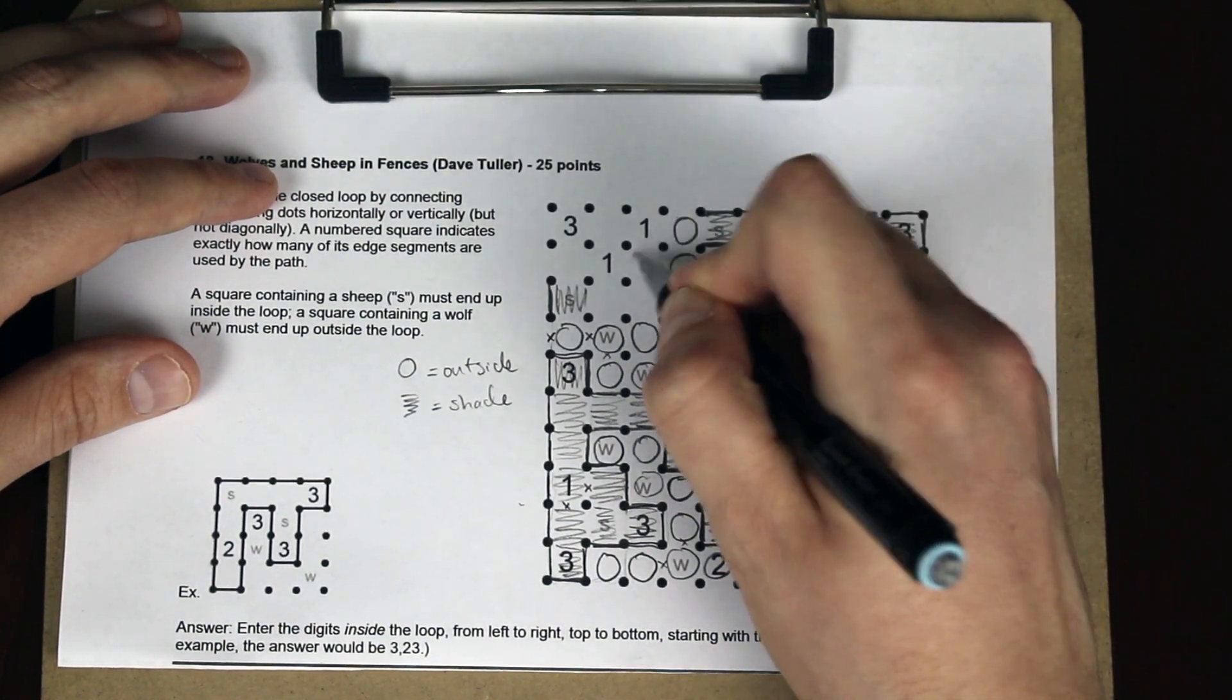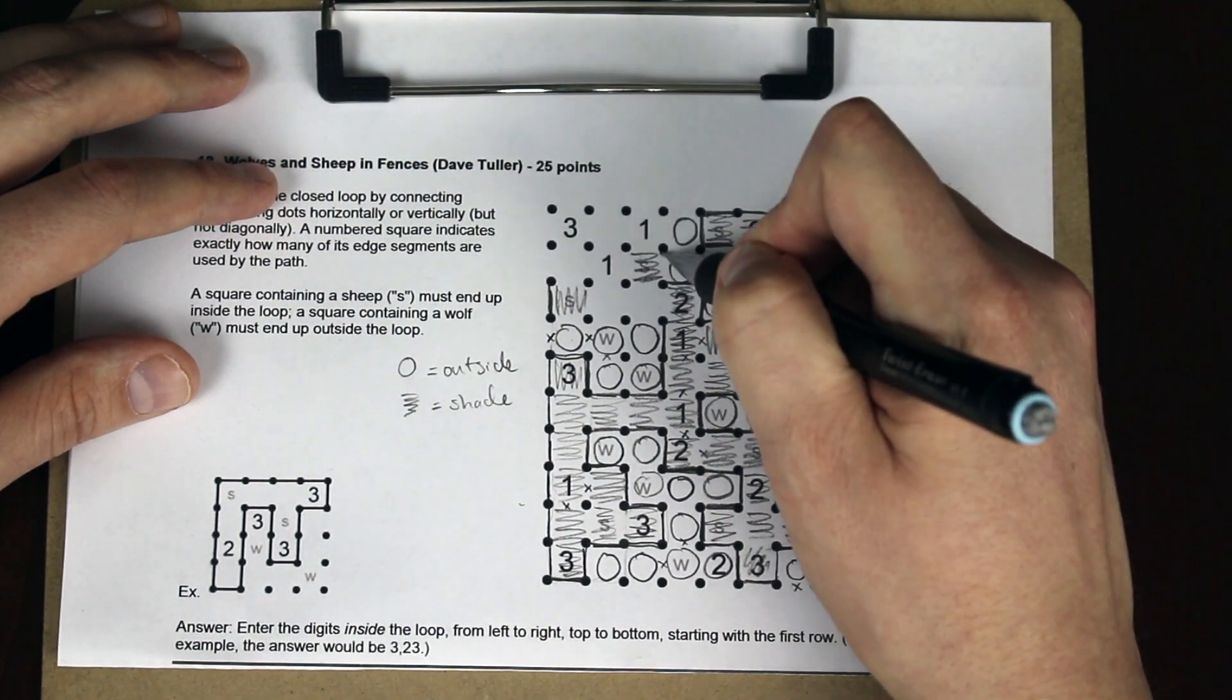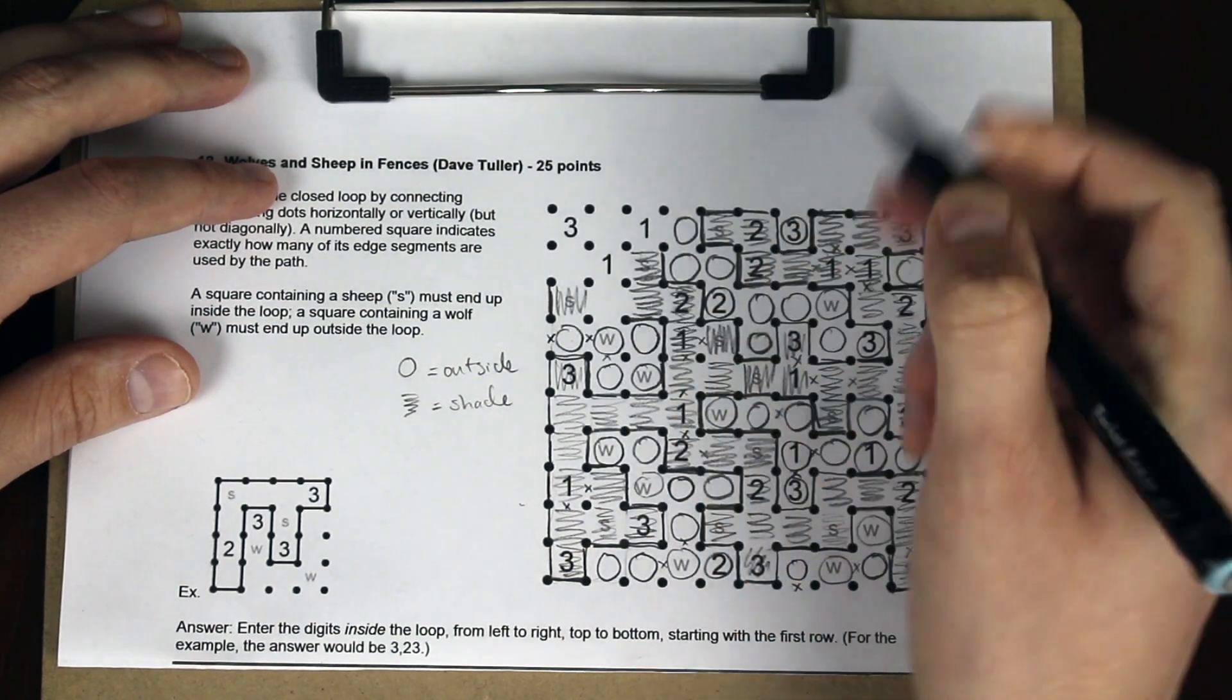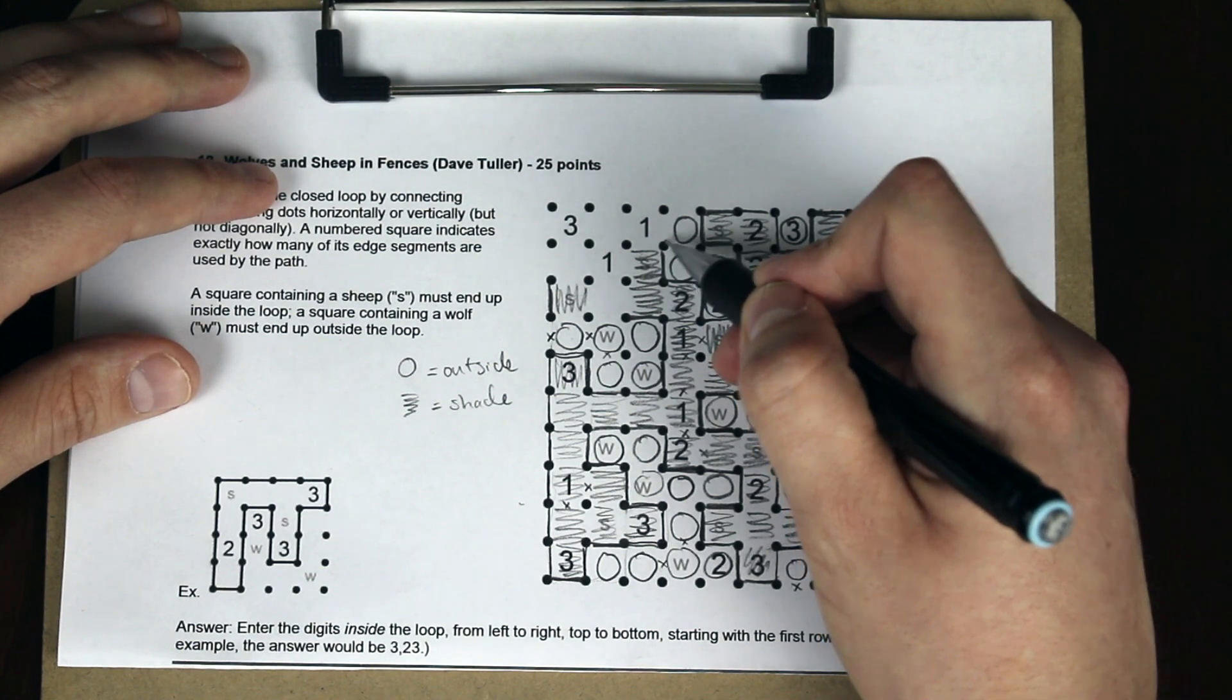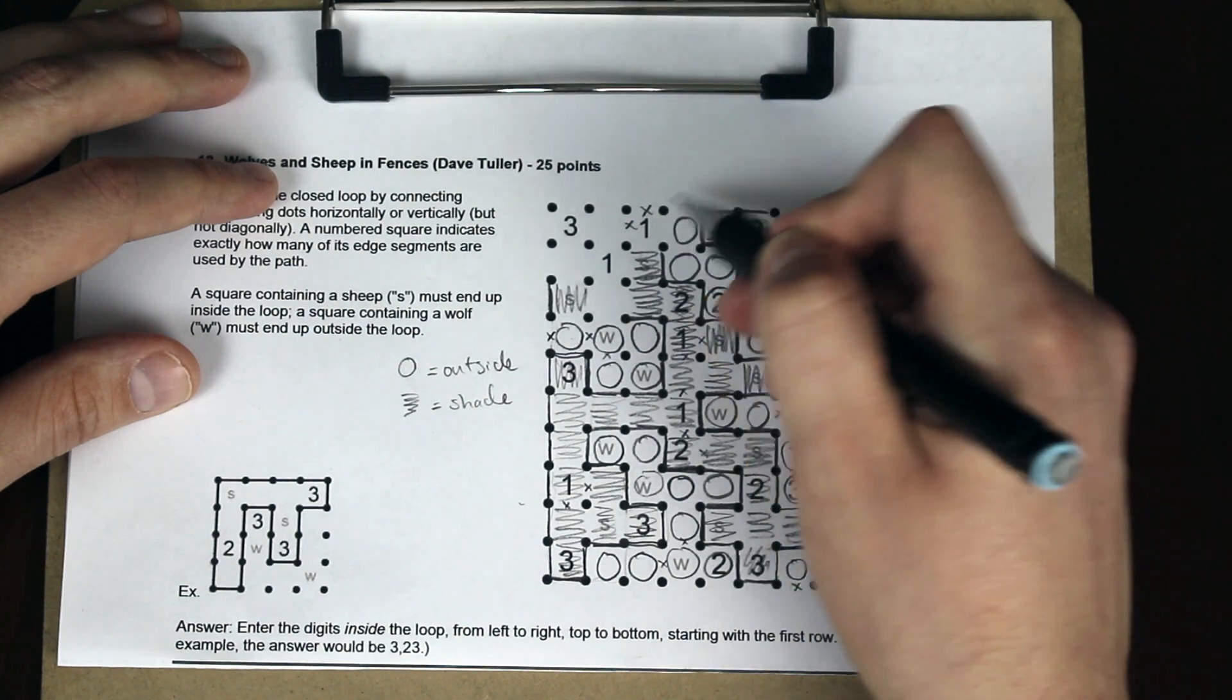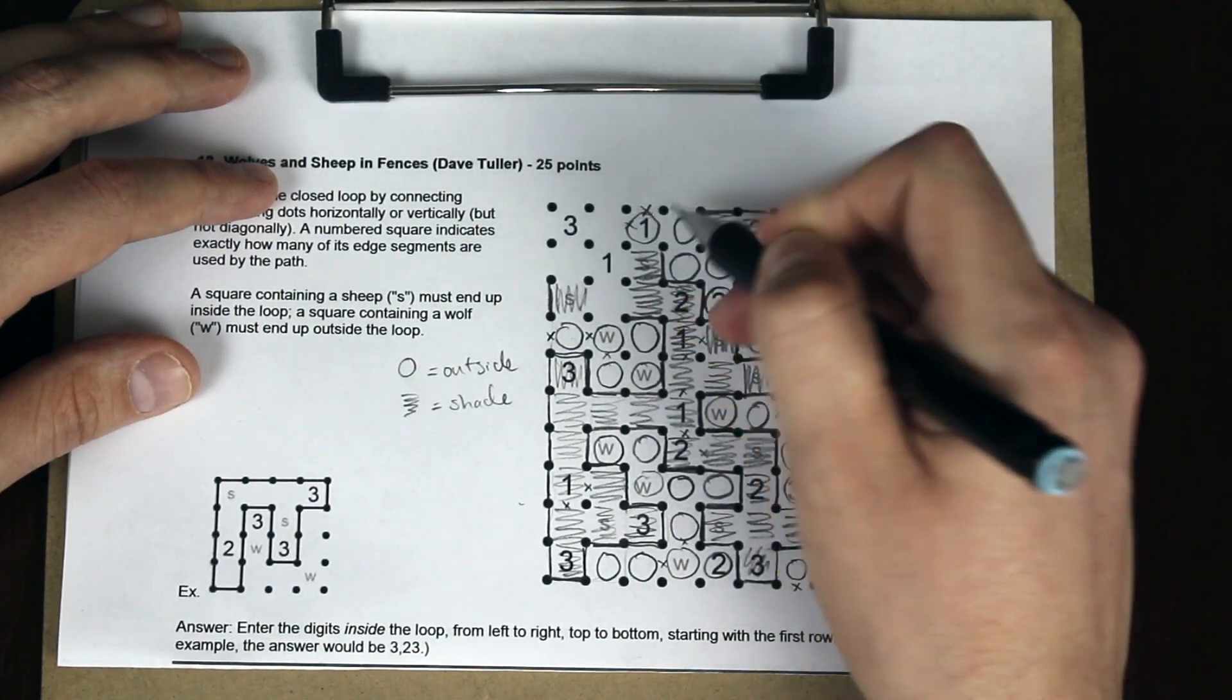That completes this two and tells us many more squares that are outside the loop. That completes this two, which shows us this two is inside the loop. Now there's only one edge left for this one. And we have another situation where an outside wolf is trying to escape. The only way it can do so is like that.